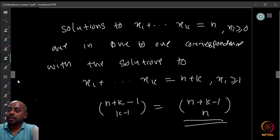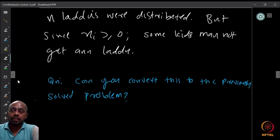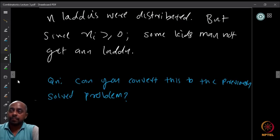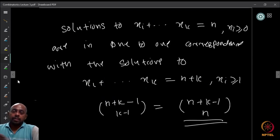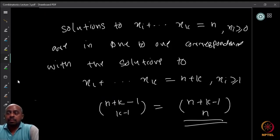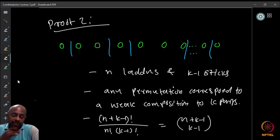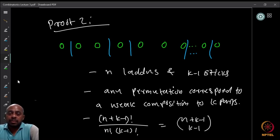So we have already proven it: the number of weak compositions is C(n+k−1, n). Now let me give you another proof of this result.